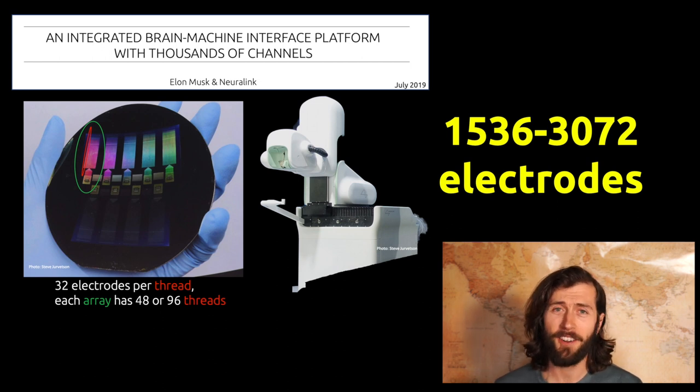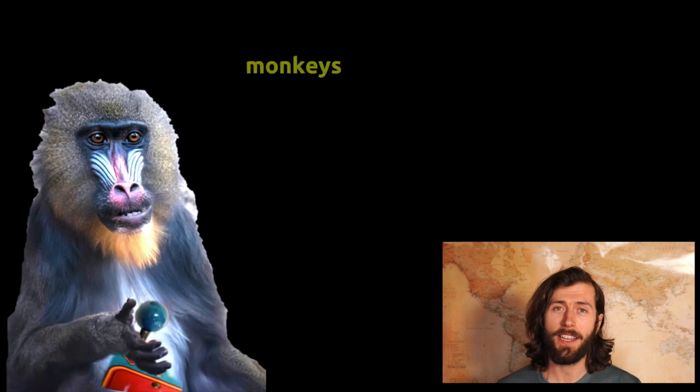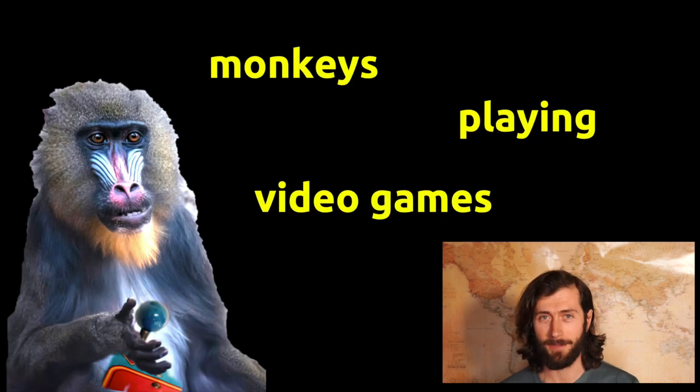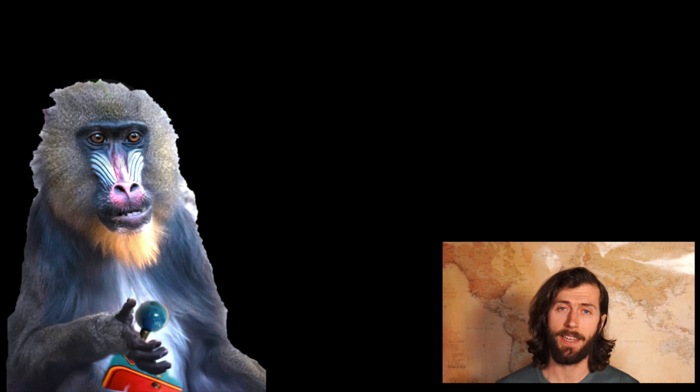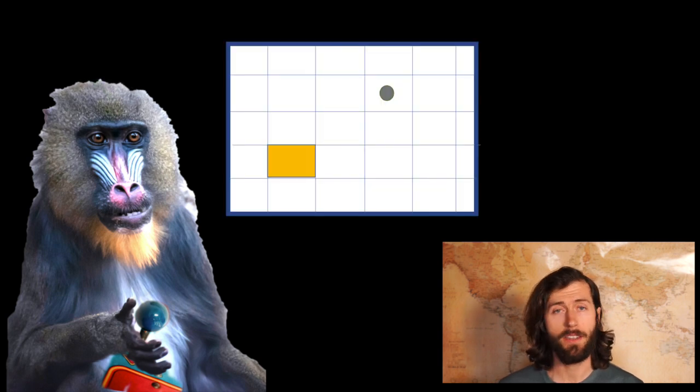But you're not here to learn about electrodes. You're here to learn about playing video games. So let's begin. The first step in teaching our monkey how to play a video game is to implant the Neuralink. This is done in an area of the brain called the motor cortex. This is where activity is generated when you have the intention to make a movement. Once our monkey has the implant in his brain, he will begin to play the game with a normal joystick.